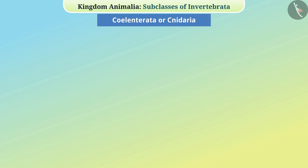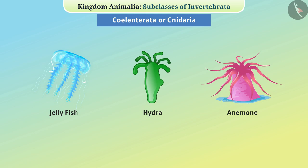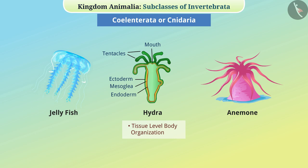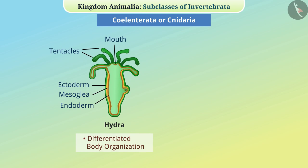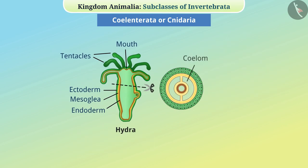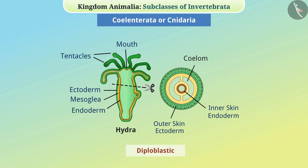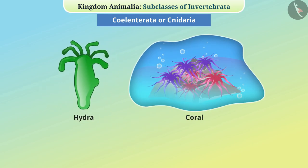Cylentrata or Cnidaria: These include organisms like Hydra, Jellyfish, Anemone, etc. They are all multicellular aquatic animals and their body organization is at tissue level — more differentiated than that of Porifera. There is a coelom in their body. Their body is made up of two cell layers — outer ectoderm and inner endoderm — and hence they are diploblastic. The space between the two layers is filled with a jelly-like substance called mesoglea. Some species such as corals live in groups while some like Hydra remain alone. They can reproduce both sexually and asexually.